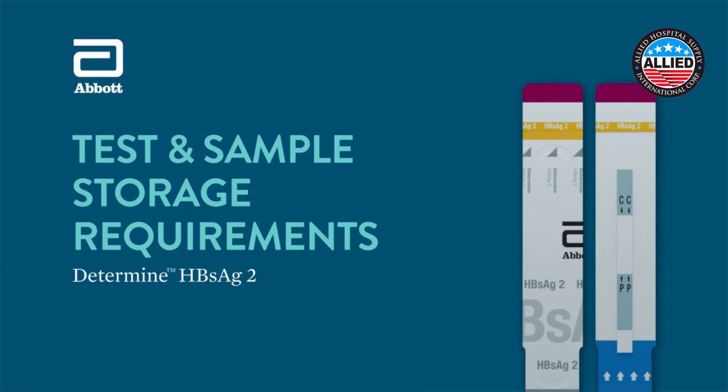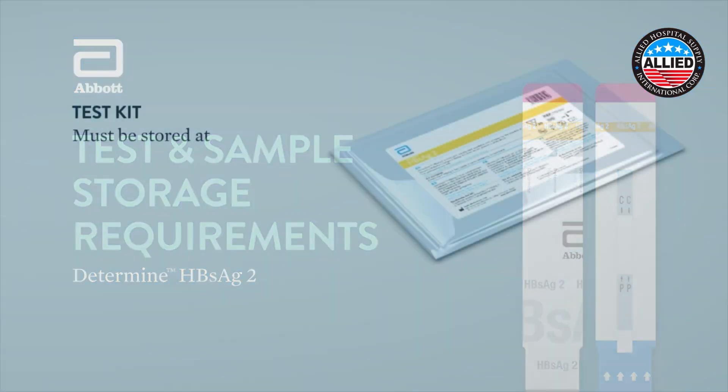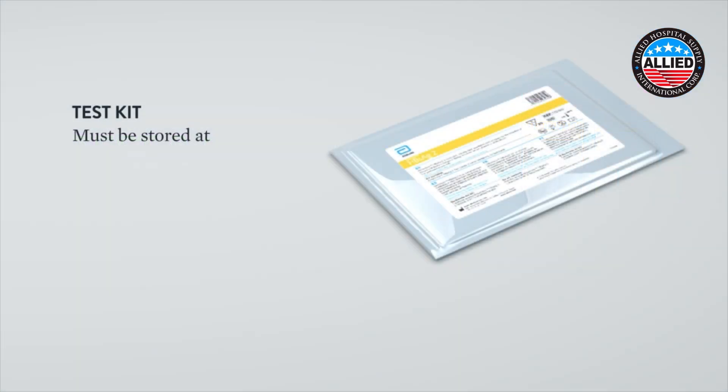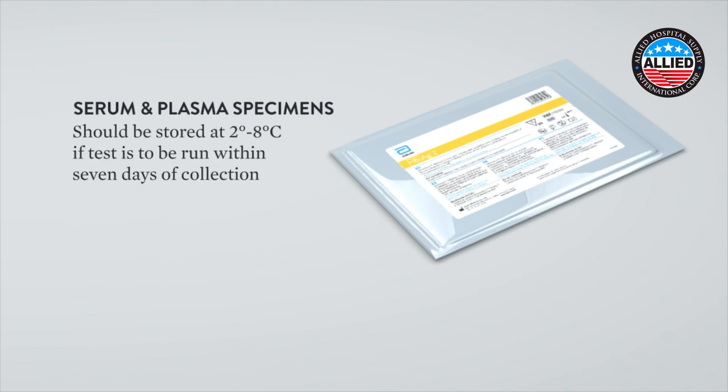Test and Sample Storage Requirements. The test cards in the aluminum Ziploc pouch containing desiccant must be stored at 2 to 30 degrees Celsius, or 36 to 86 degrees Fahrenheit, until expiration date. Serum and plasma specimens should be stored at 2 to 8 degrees Celsius if the test is to be run within 7 days of collection.